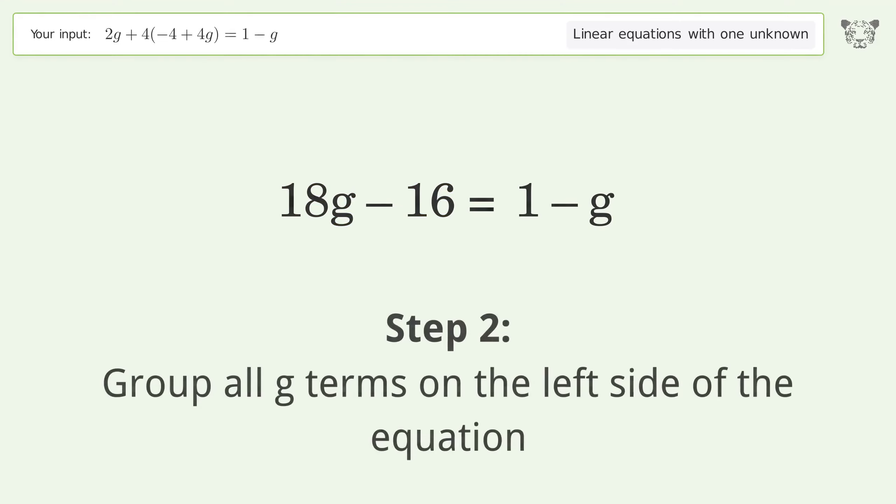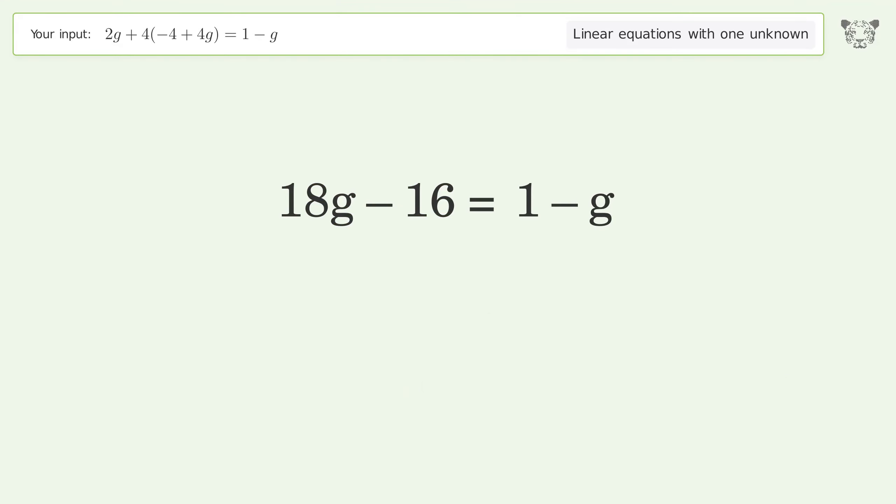Group all g terms on the left side of the equation. Add g to both sides. Group like terms. Simplify the arithmetic.